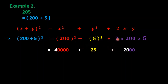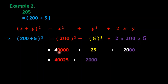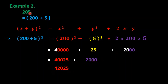Then 5² = 25. For the last term, 2 × 200 × 5: multiply 2 × 2 = 4, then 4 × 5 = 20, and append the double zeros to get 2000. Adding all three terms: 40000 + 25 = 40025, then 40025 + 2000 = 42025.